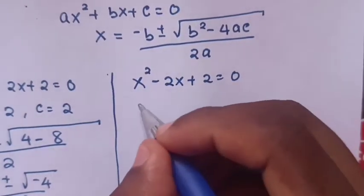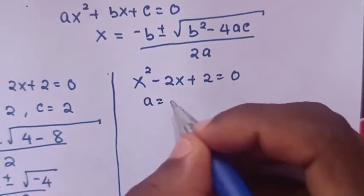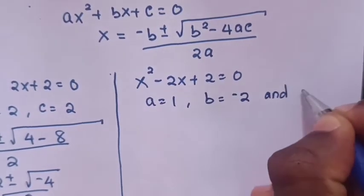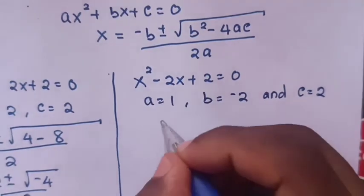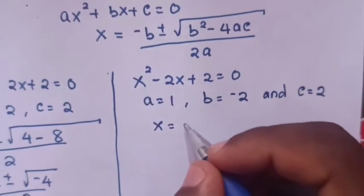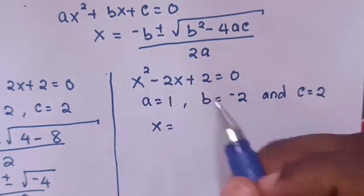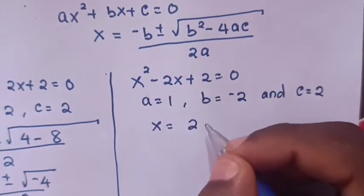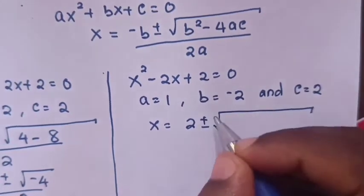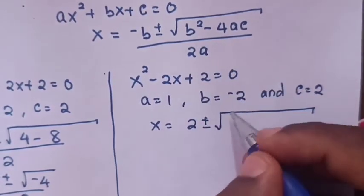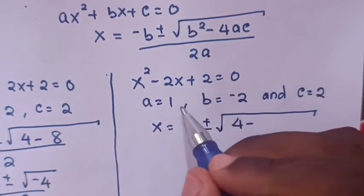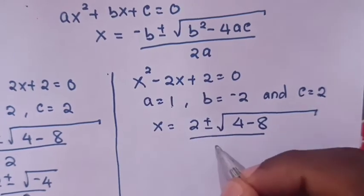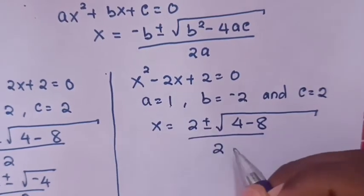Also, we can get the value of x from the second quadratic equation, where a equals 1, b equals negative 2, and c equals 2. Now from x equals negative b, here it will be negative negative 2, which is positive 2, plus or minus the square root of (negative 2)² which is 4, minus 4 times 1 times 2 which is minus 8, divided by 2.